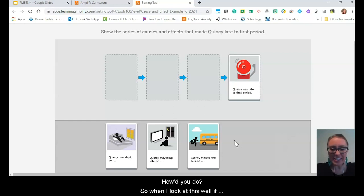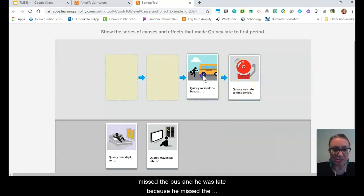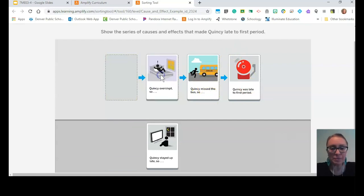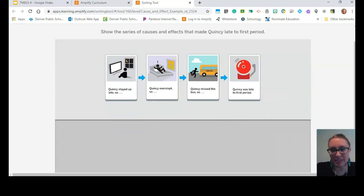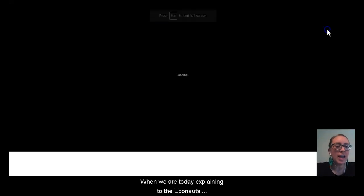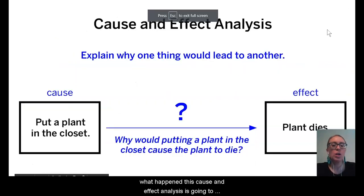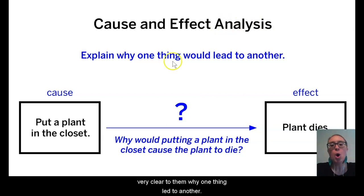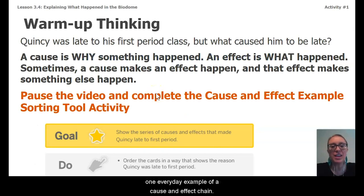How'd you do? So when I look at this — he was late because he missed the bus. He missed the bus because he overslept. He overslept because he stayed up late. When we are explaining to the Econauts what happened, this cause and effect analysis is going to be very important because we have to make it very clear to them why one thing led to another. The Quincy example is one everyday example of a cause and effect chain.